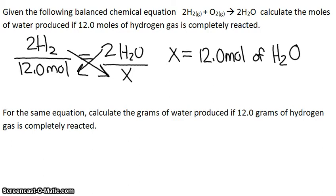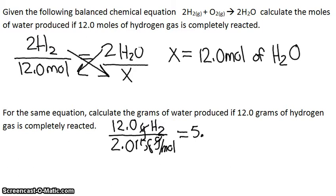So first we have to convert our grams to moles. So we have 12.0 grams of H2, and if you watch our molar mass video, you will know how I find the molar mass of H2, which is 2.0158 grams per mole. And then the grams cancel, and you get your moles, so you get 5.95 moles of H2 gas.